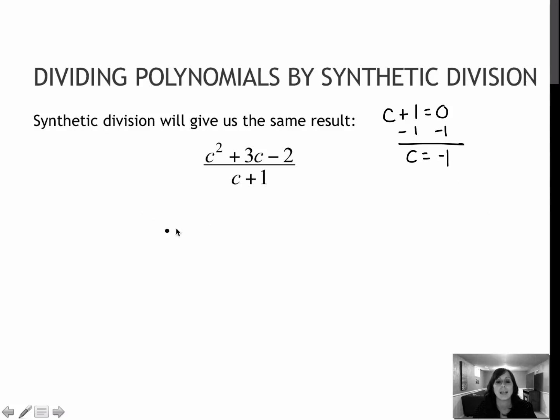When I set up synthetic division, the great thing about it is that I don't have to put all of those variables in there. I'm going to use a negative 1 on the outside. So right here is whatever I get when I set this equal to 0. On the inside, I'm going to only use the coefficients from this first polynomial. So I'm going to use 1 for 1c squared, 3 for 3c, and negative 2 for my negative 2.